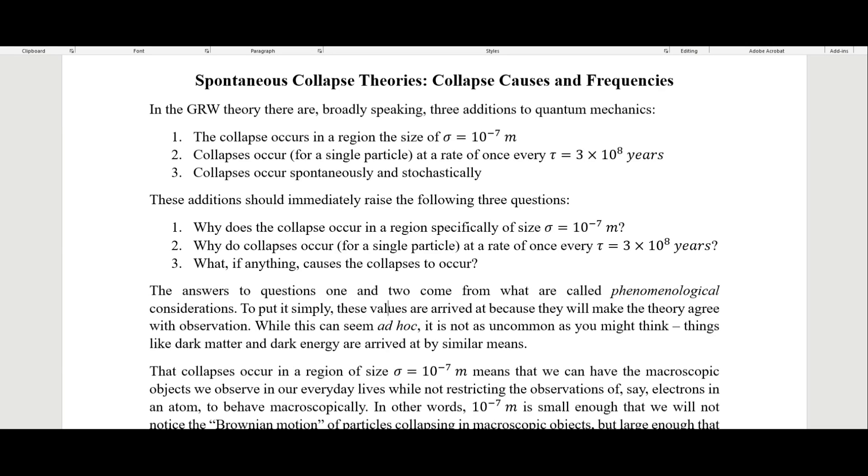In the previous video, we discussed spontaneous collapse theories, and I established that in GRW theory, which is the main spontaneous collapse theory, broadly speaking, there are three additions to quantum mechanics: the collapse occurs in a region of about 10^-7 meters, collapses occur for a single particle at a rate of about once every 300 million years, and collapses occur spontaneously and stochastically.